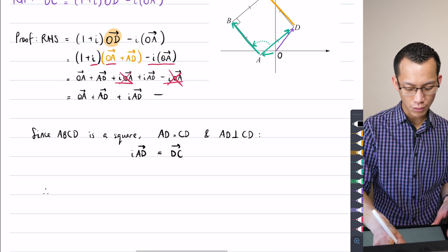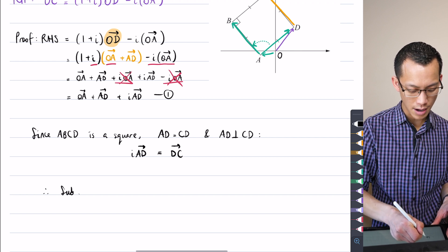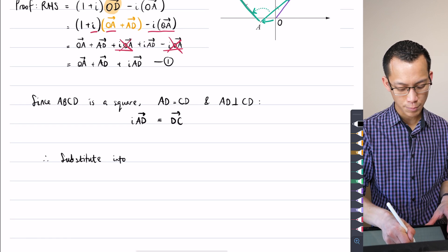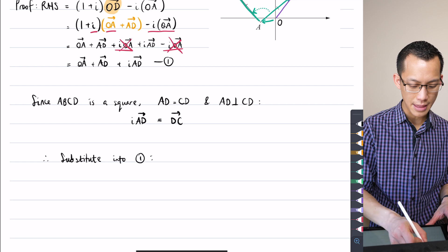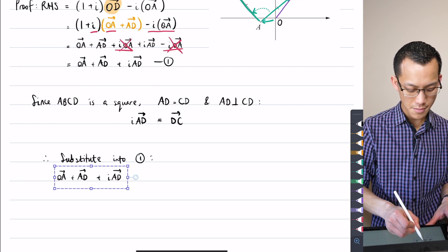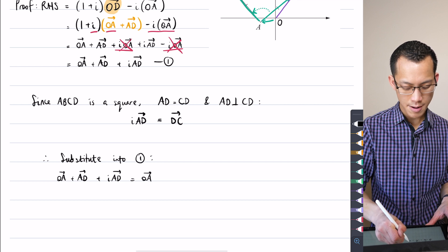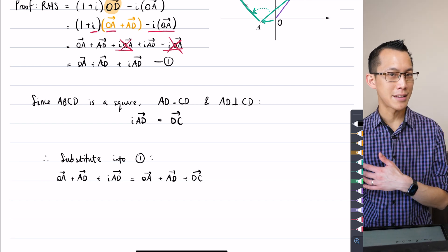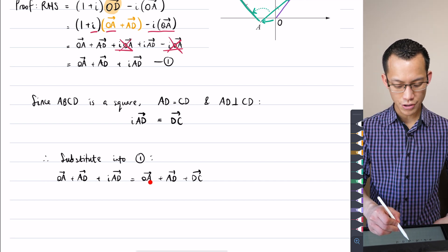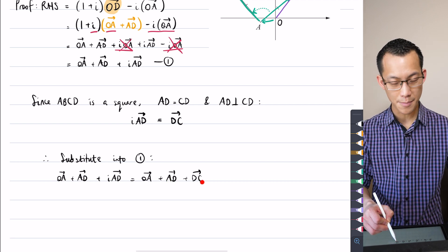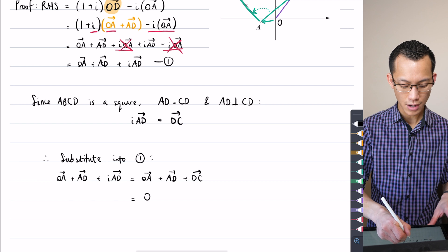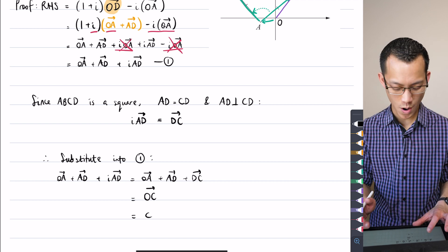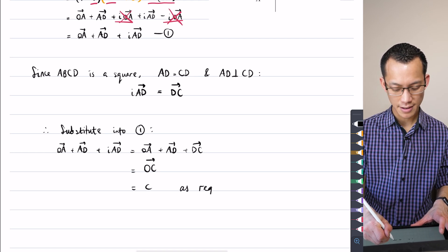So therefore, if I call this one up here, I'm going to substitute this into equation one and hopefully you're following along and can see this pretty much gets us home. I can say that this is going to be equal to OA plus AD plus DC. So you should just follow the tail to head, tail to head of the vectors. You're starting at O, you're getting to A, you're getting further on to D, and then you're ending up at C. So this is by definition OC, which is C as a complex number as required.